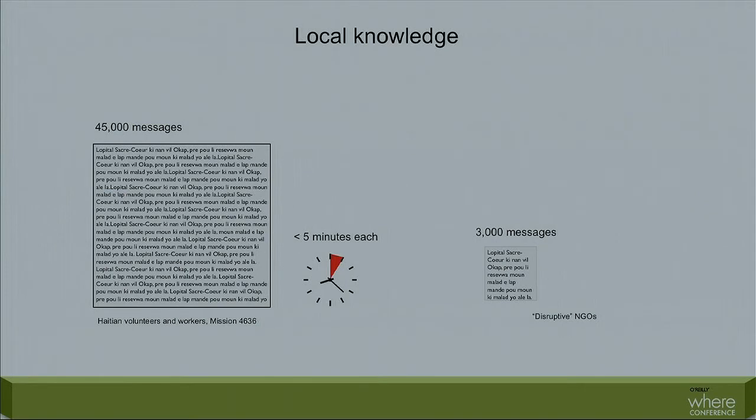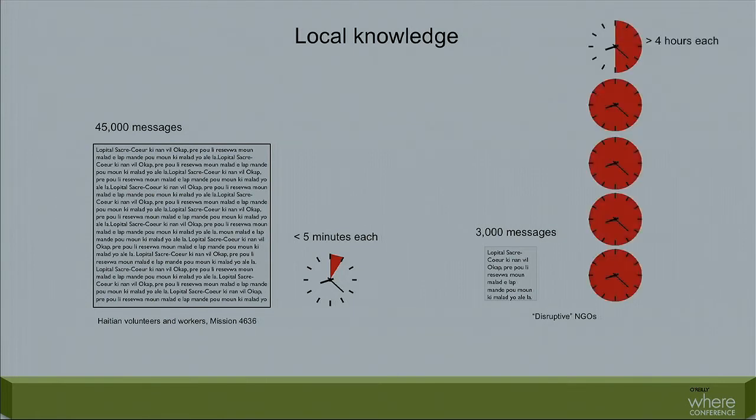We can do the math on this and work out how important local knowledge is. International NGOs labeled by others as disruptive also worked on mapping at this time and were able to process only about 3,000 messages with an average turnaround of more than four hours. This is one instance where encouraging people to continue their linguistic practices is more important than introducing new disruptive or innovative technologies.